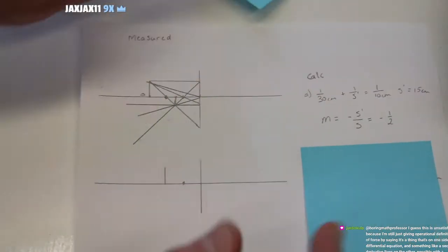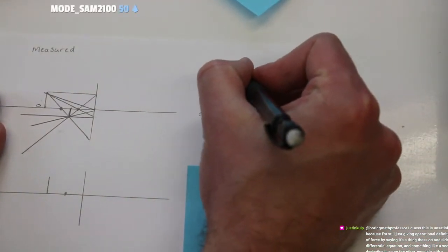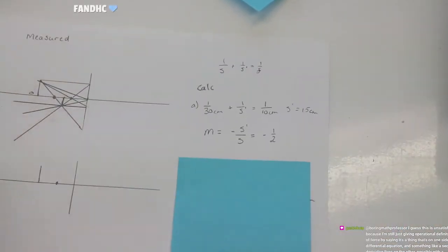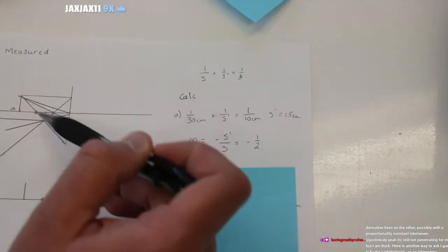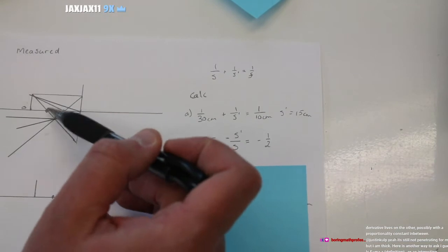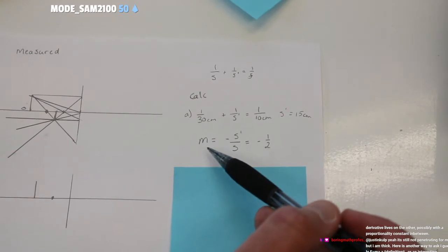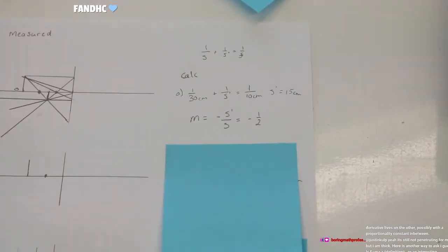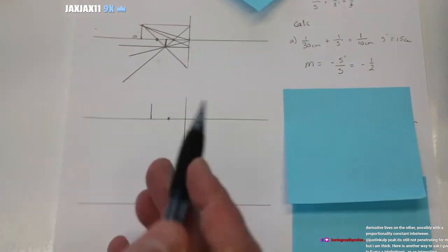Using the mirror equation — one over the object distance plus one over the image distance equals one over the focal length — if we calculate this we get 15 centimeters. And if we measured it on our diagram, we'd get the same thing: it's roughly in the middle between 10 and 20. The magnification here shows the image is half the size of the original object.